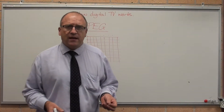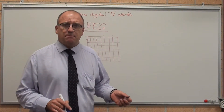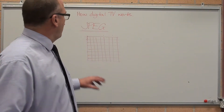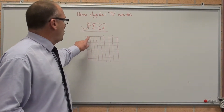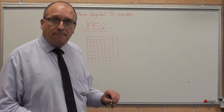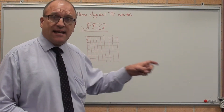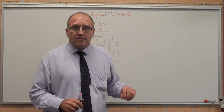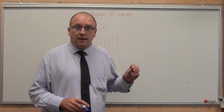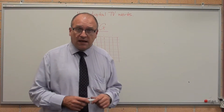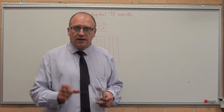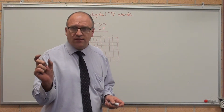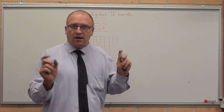So, how JPEG works. JPEG is obviously picture compression. JPEG works by dividing up your image into the individual picture elements. Pixel is short for 'pix element' — picture elements. Pictures are a series of picture elements displayed on a screen. Each picture element has a colour value associated with it and a brightness.